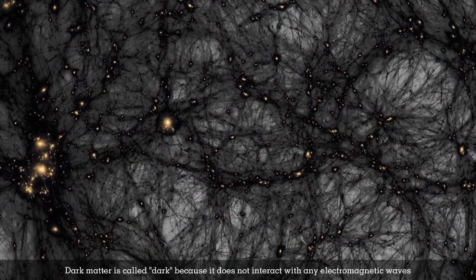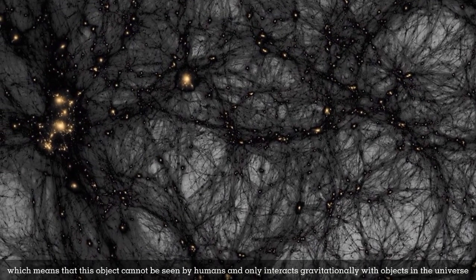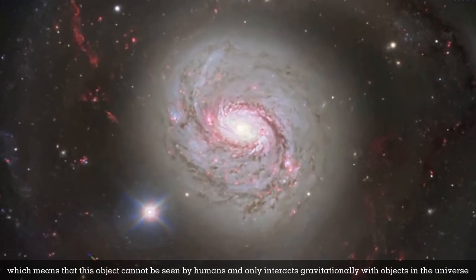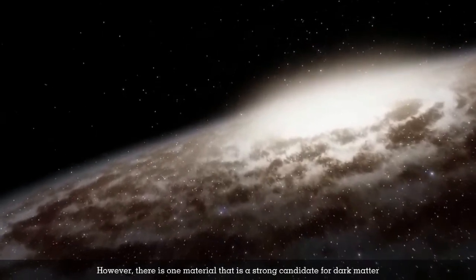Dark matter is called dark because it doesn't interact with electromagnetic waves, meaning it cannot be seen by humans and only interacts gravitationally with objects in the universe. However, there is one material that is a strong candidate for dark matter.